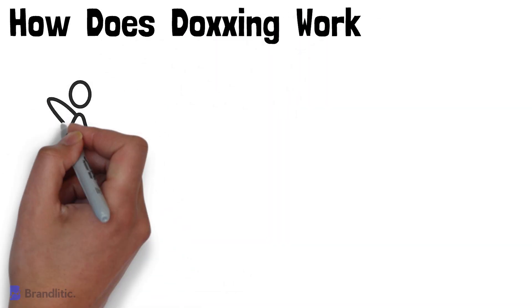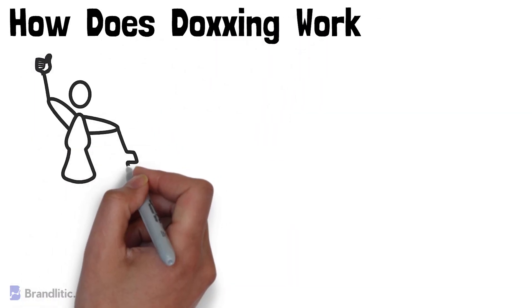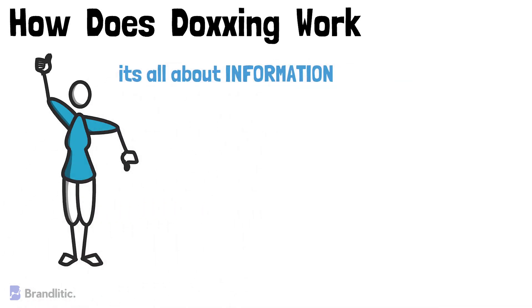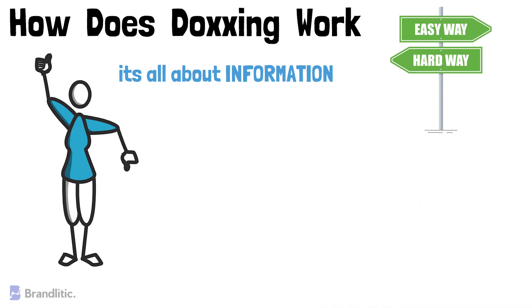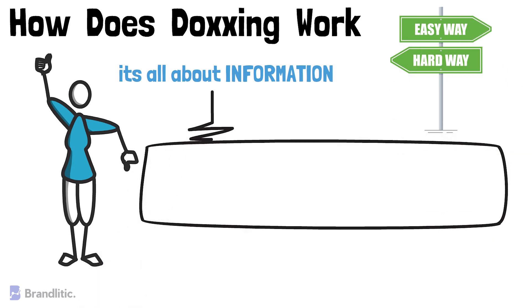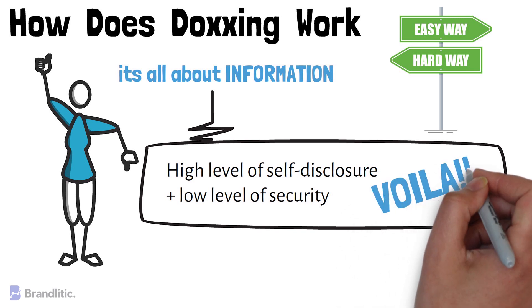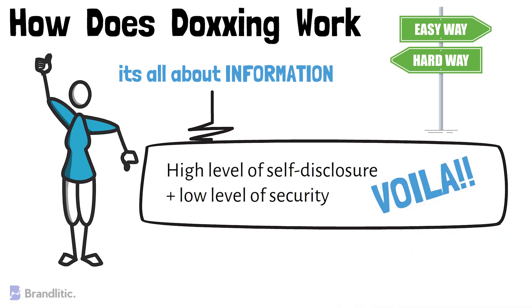Let's see how doxing works. Doxing is based on the amount of information a hacker can get about you from your online presence. Information collection methods range from easy open-source information harvesting to advanced hacking. You may combine a high level of self-disclosure with a low level of security, and an attacker can learn a surprising amount about you. The best practice is to first know what methods an attacker can use, then take preventive measures.